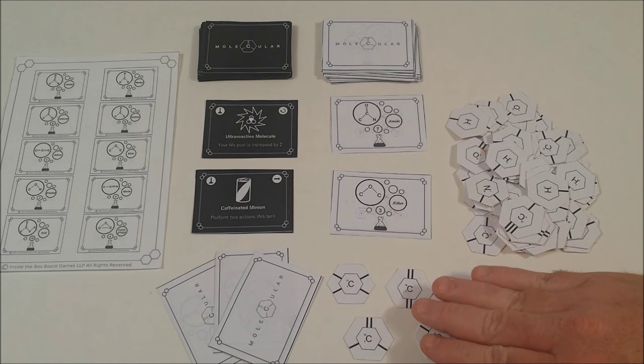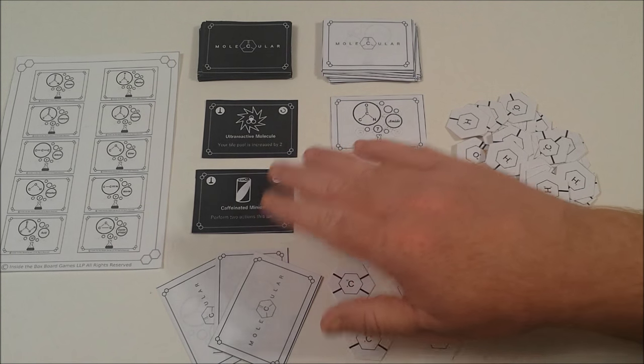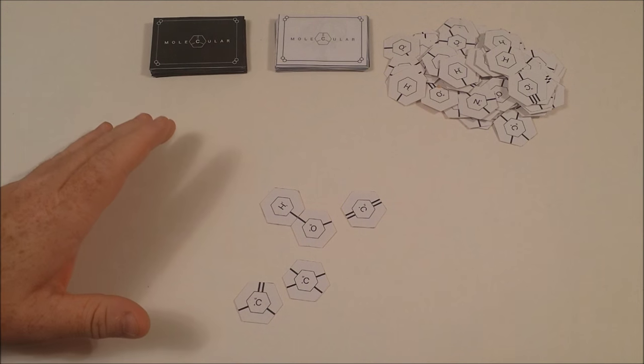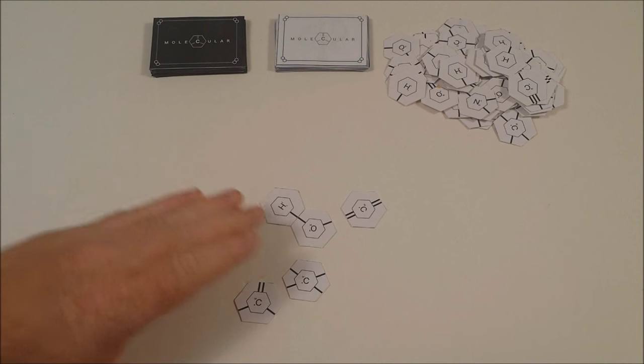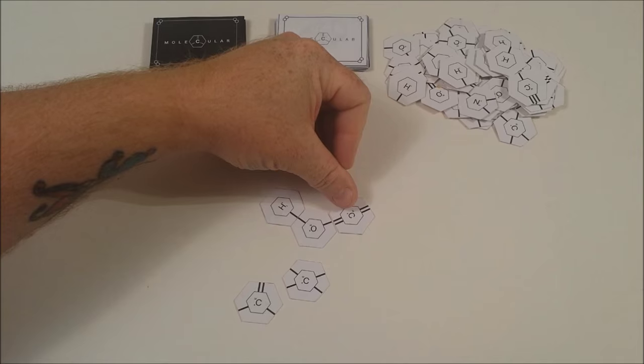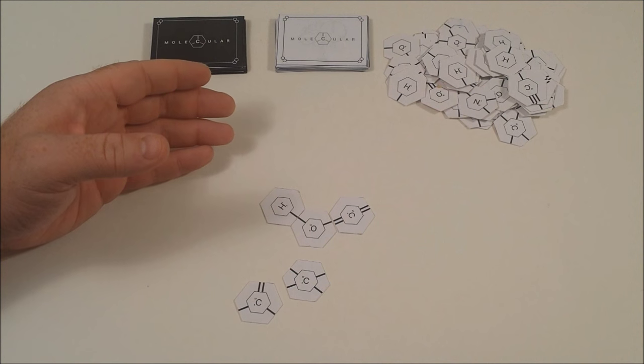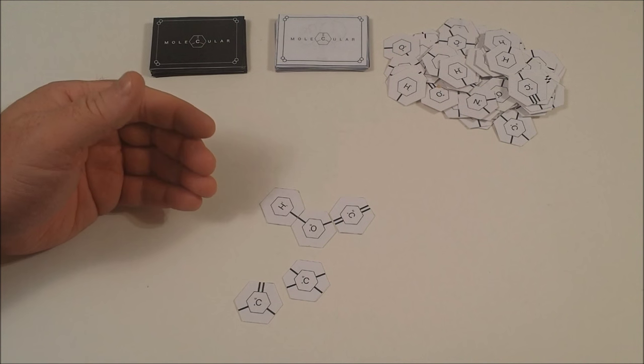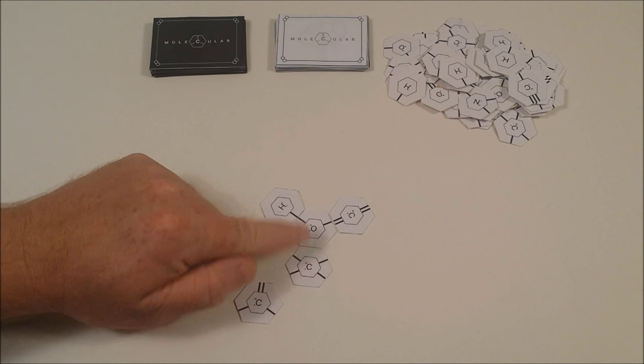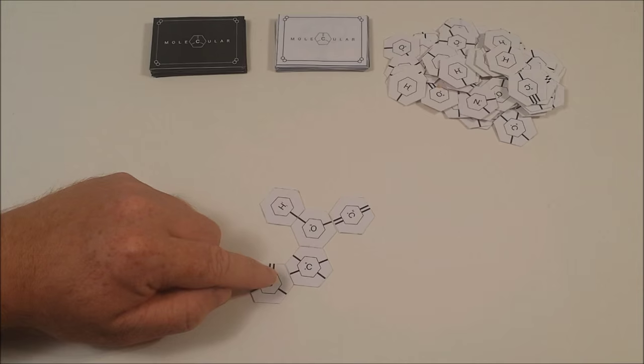The rules for tile placement are very straightforward. Each molecule has to connect through the correct number of bonds, so this carbon would not be allowed to be placed next to the oxygen as there's an extra bond. When you place a new tile, since they have to connect through bonds, you're not able to play a new tile edge to edge. Remember, when placing a tile the bonds have to connect, so a bond cannot go next to a blank edge.